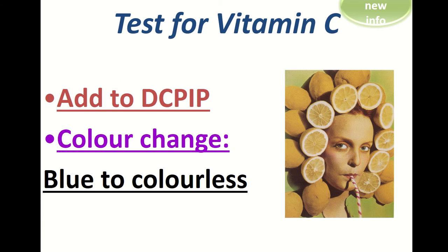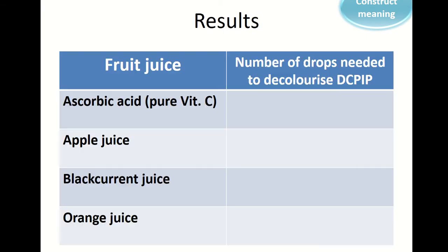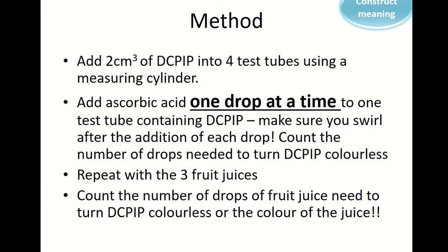So our method is to add two centimeters cubed of this DCPIP into four different test tubes. We're going to add ascorbic acid one drop at a time, which is pure vitamin C, and we will swirl it after each drop.